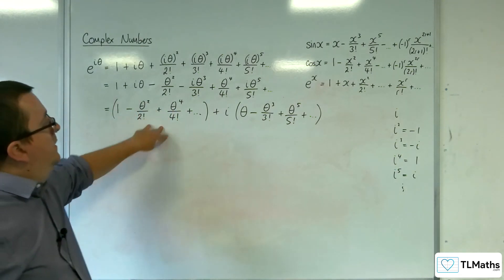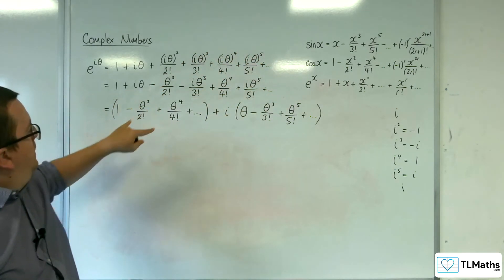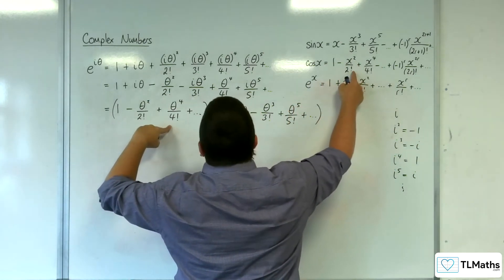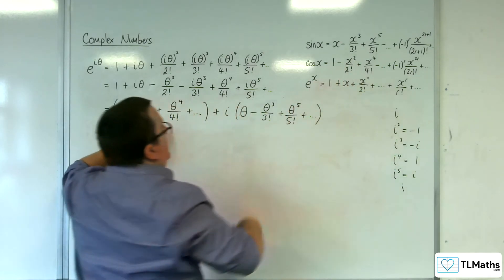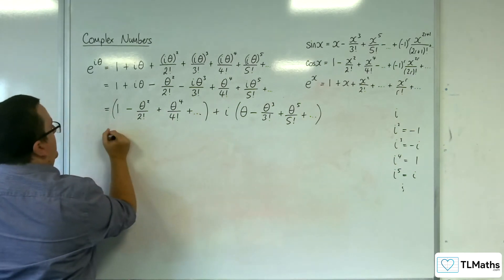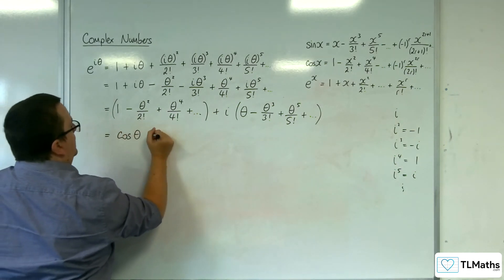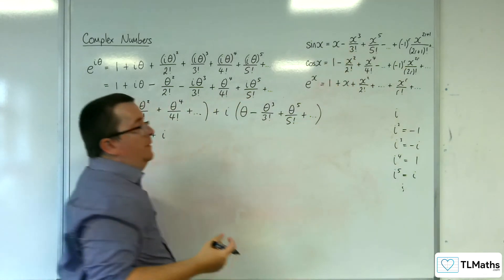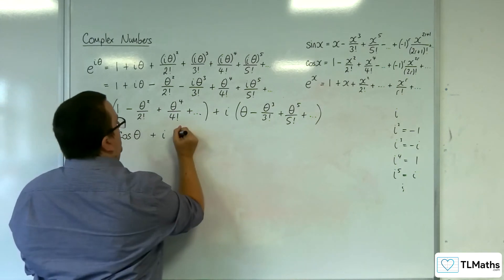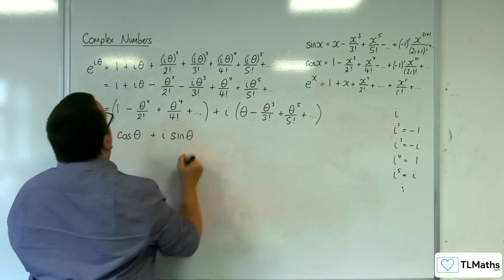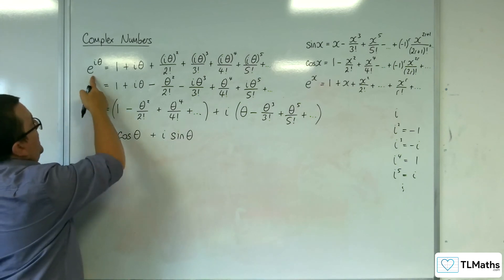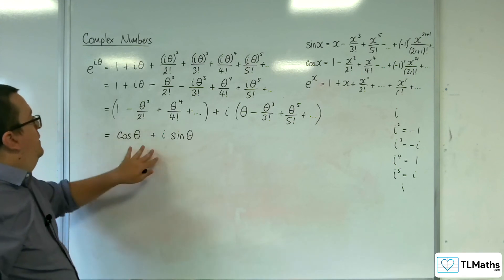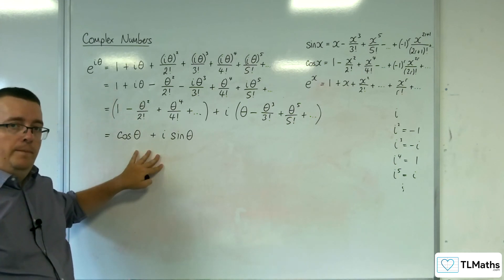Now, look back at your McLaren series. This bit here is precisely the same as this one here, where the x is theta. And so that infinite series there is cosine of theta. And this one is precisely the same as this one, so you've got sine theta, so i sine theta. So what we've shown is that e to the i theta is cosine theta plus i sine theta. These two things are the same.